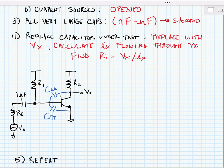All right, so we've drawn an equivalent circuit where we've shorted our voltage sources and large capacitors, and we've opened our small capacitor C mu. We're going to replace C pi, the capacitor under test, with a voltage source V sub X, and we'll calculate the current that flows through V sub X named I sub X.